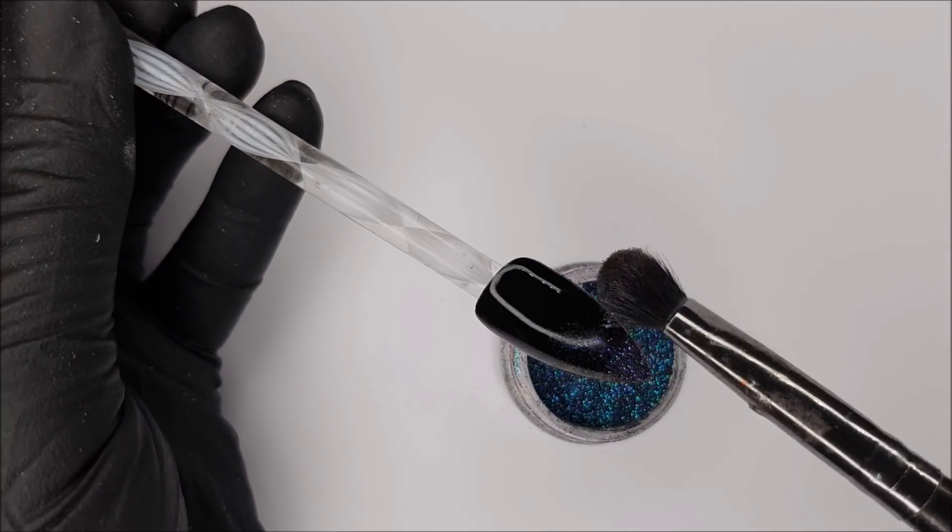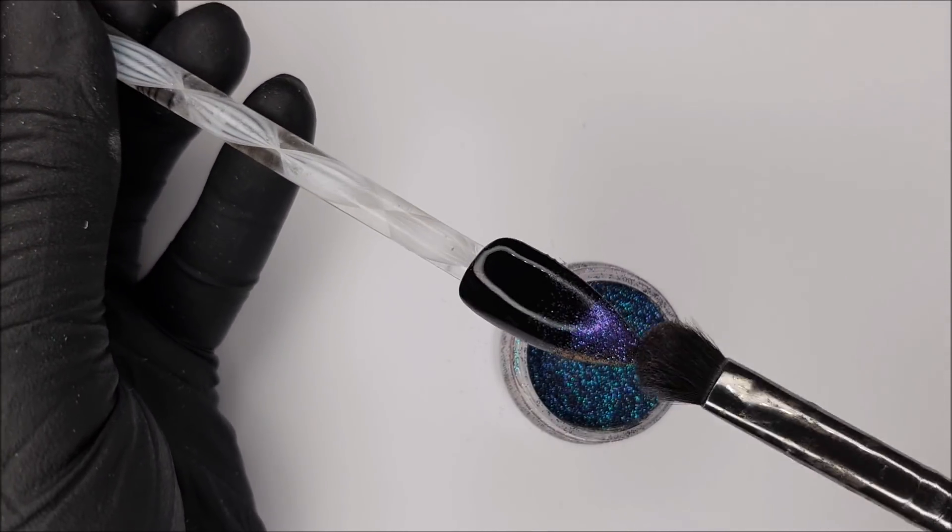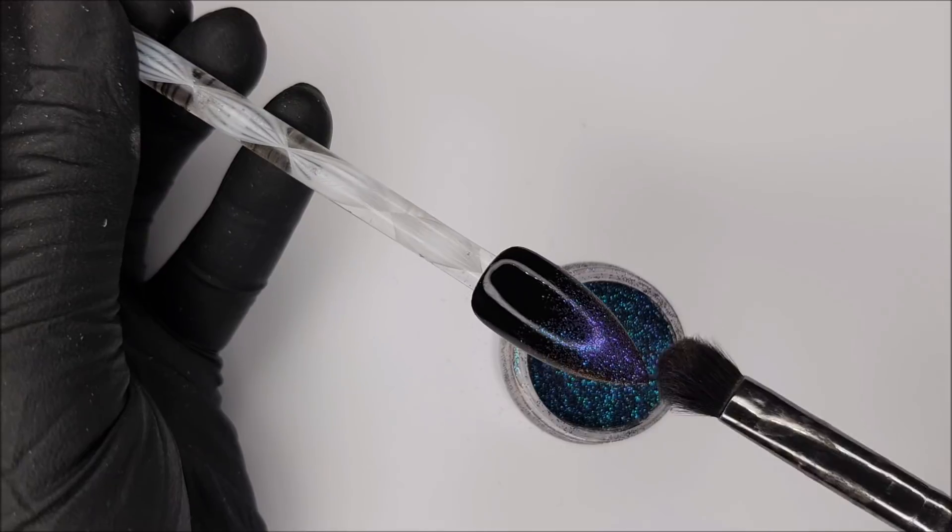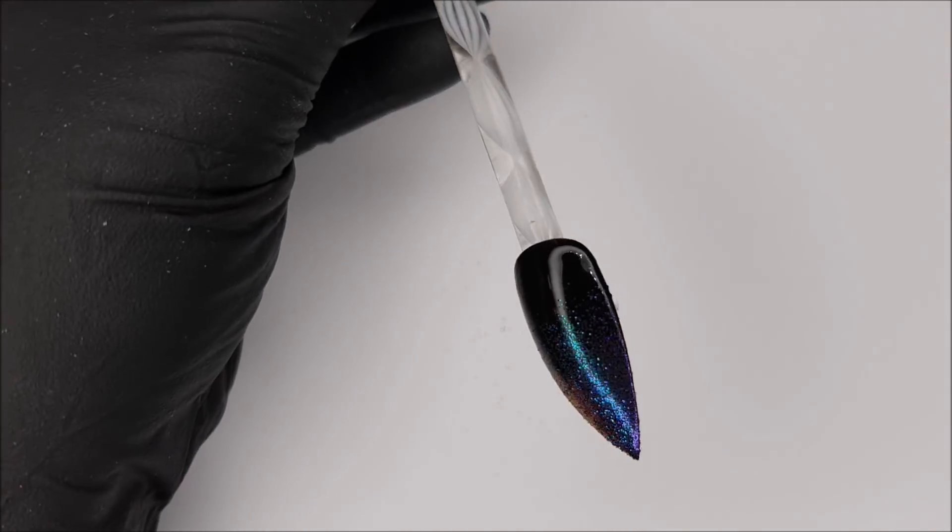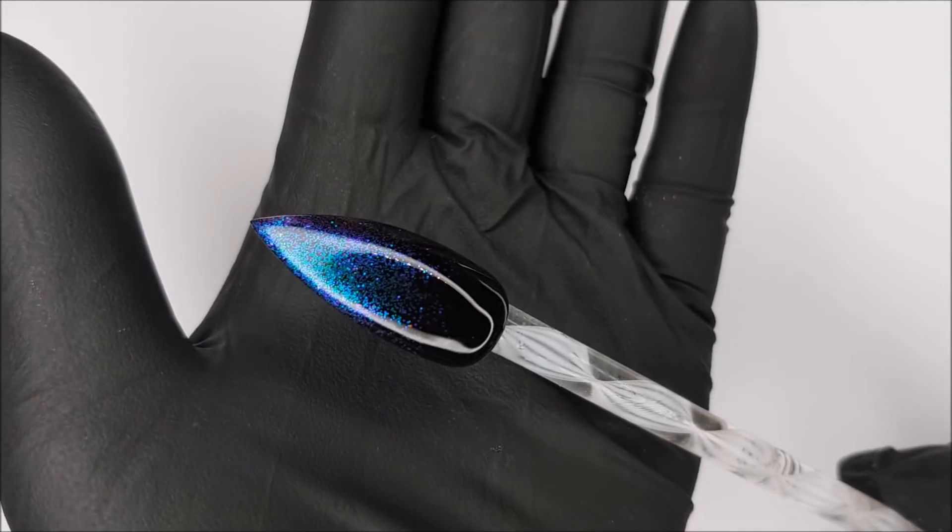The glitter I'm using is by Luxor Polish. It's a nice color-shifting glitter. I'm just going to come down from the top and create an ombre. You can top coat that once you're done, and that's the thumb finished.